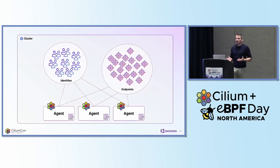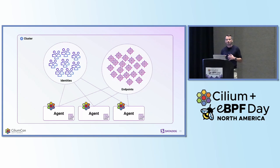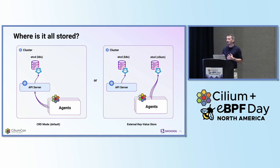Looking at the bigger picture, to enforce network policies, each Cilium agent has to keep track of all of the endpoints and identities that are part of the cluster. However, there is no peer-to-peer sharing of that information — instead, they all rely on a centralized source of truth. That source of truth can be implemented in a couple of ways: either through the cluster's API server leveraging custom resource definitions, which is now the default method, or through a dedicated key-value store such as an etcd cluster.